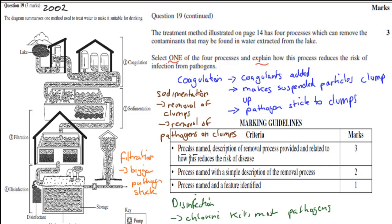So it says you need to name the process, describe the removal in terms of how it helps remove certain pathogens, and if these pathogens are removed, how will that reduce the risk of disease. So three things to get three marks: name it, describe how this stage removes the pathogens, and how that reduces the risk of disease. If you did only two of them, you get two marks; if you did only one, you get one mark.